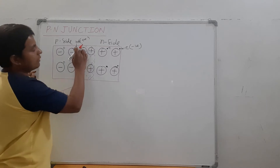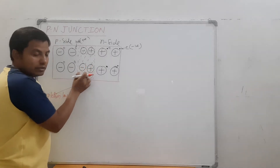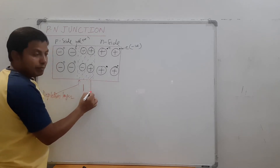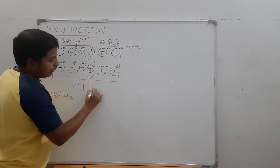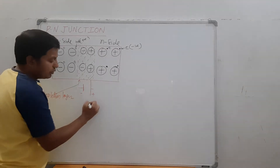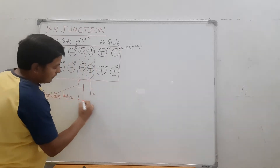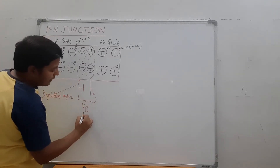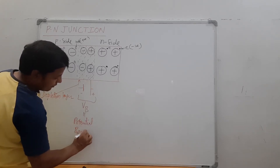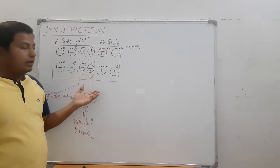Now, what about the depletion layer? The immobile ions on the P side are negatively charged and the ions on the N side are positively charged. So this side becomes negative and this side becomes positive. A potential difference is therefore developed here, and this potential difference across the depletion layer is known as the potential barrier, VB.